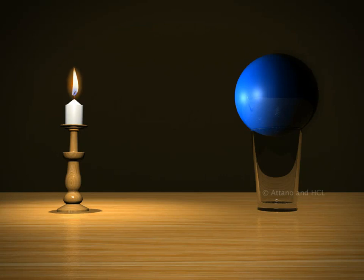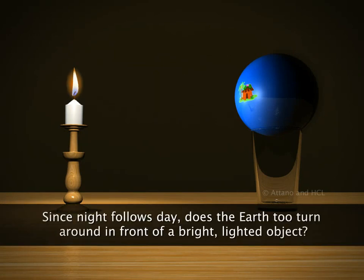If you continue to rotate, the dark part of the ball gets lit up again. You know that night follows day. Does that mean that the earth too is turning around in front of a bright, lighted object?